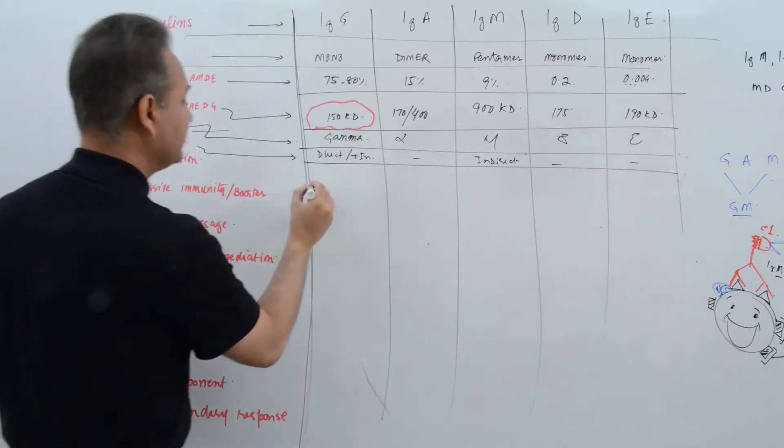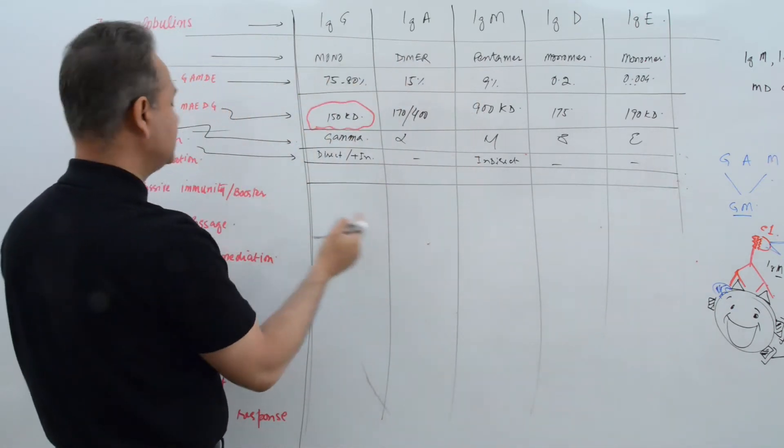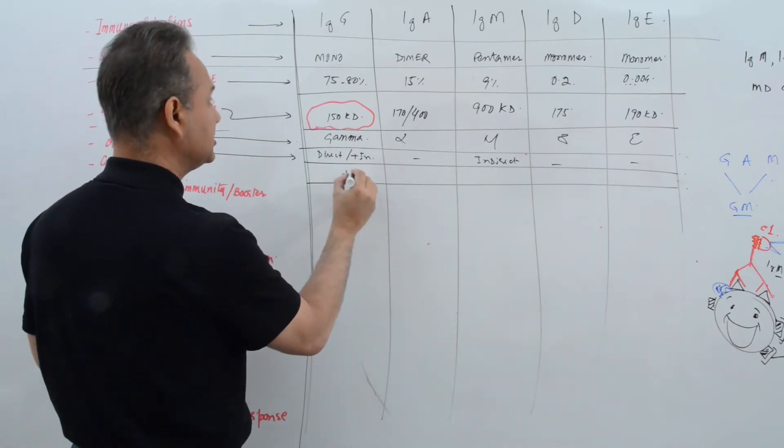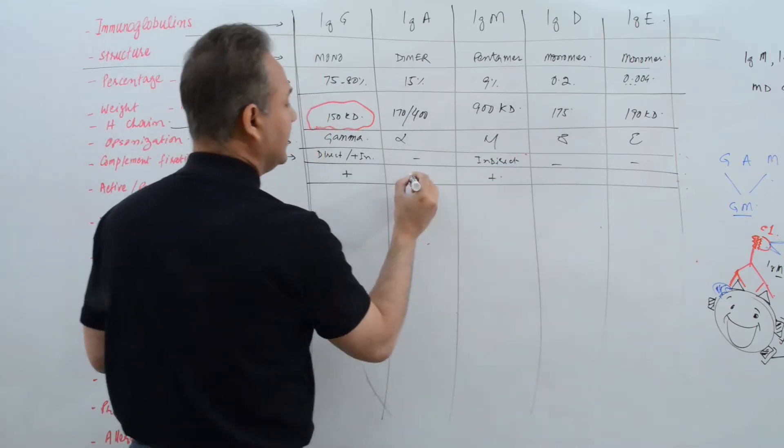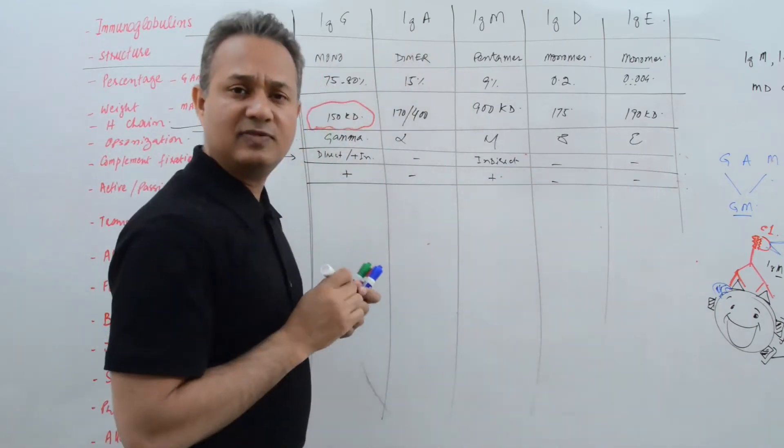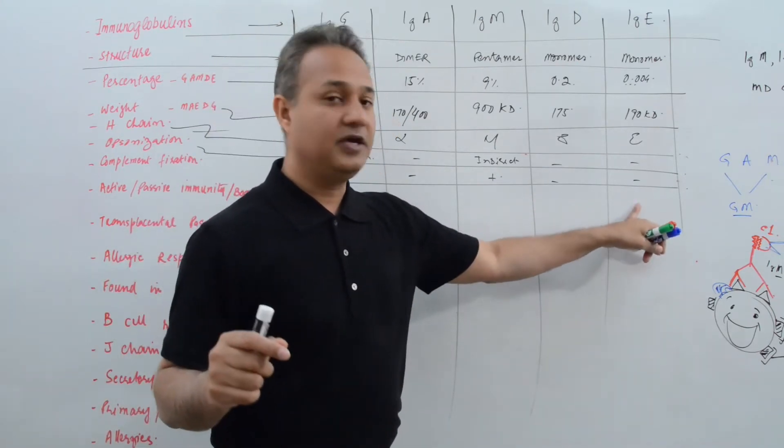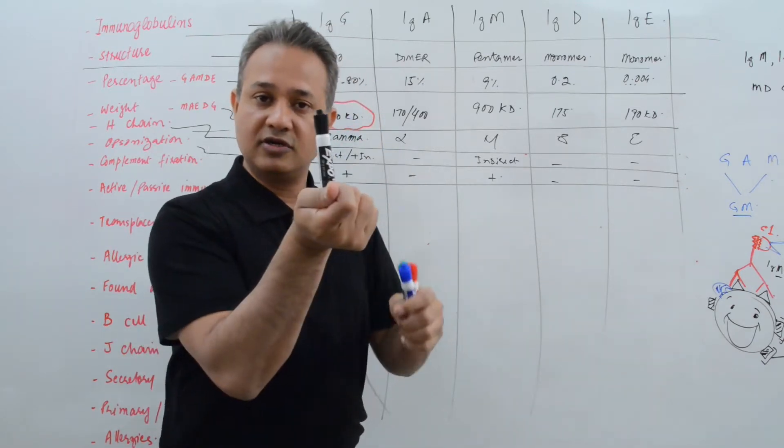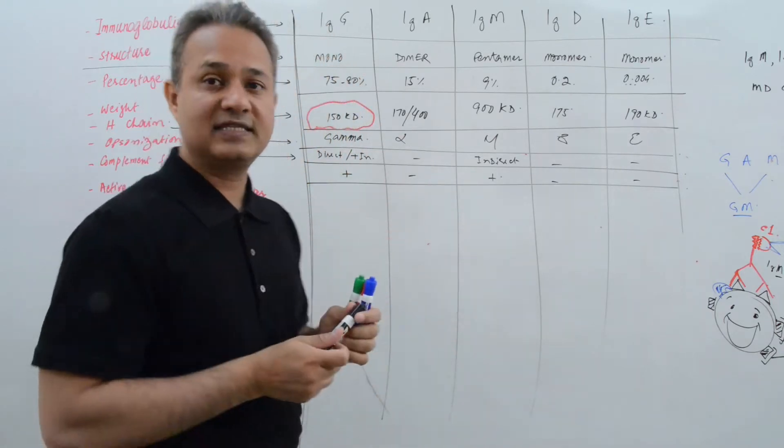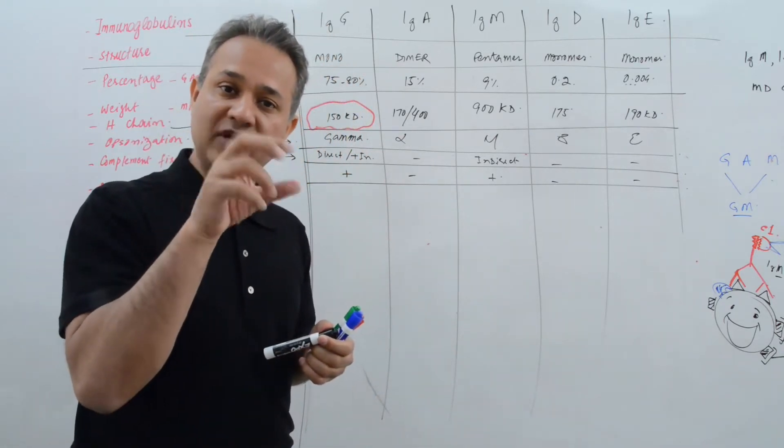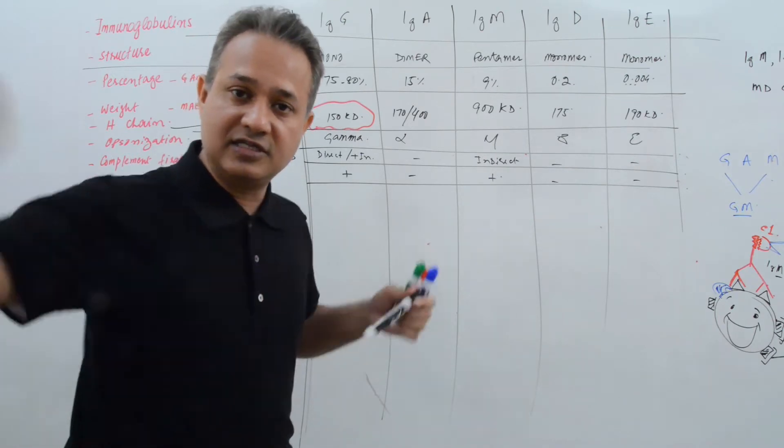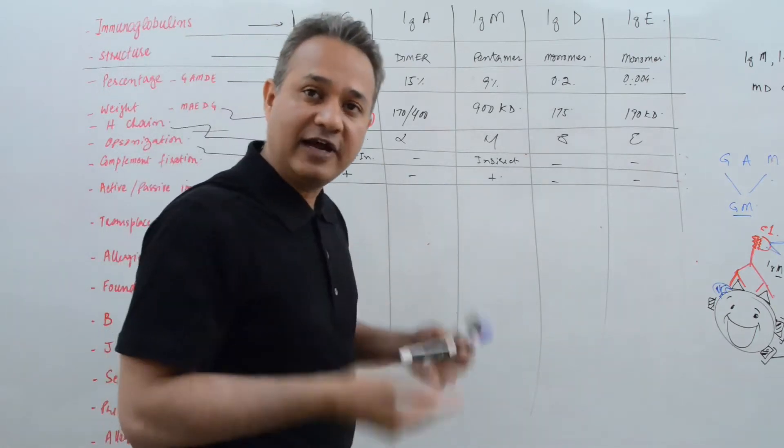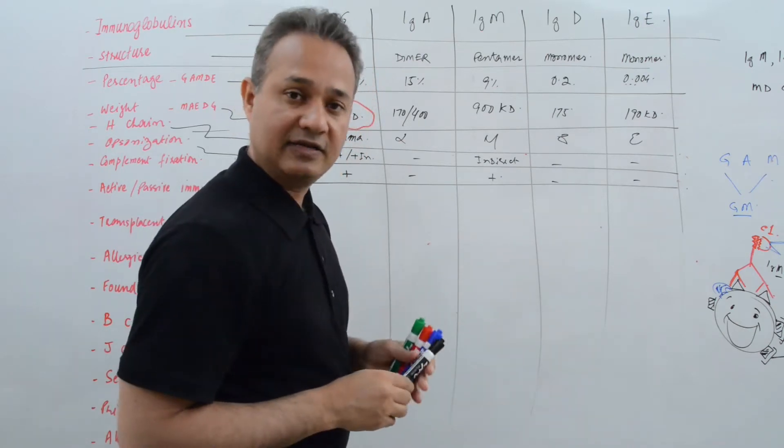Then complement fixation. The indirect means complement fixation. So there are just two, IgM and IgG. G, M makes classic cars. So complement fixation IgG yes, IgM yes, A, E, no. And it's very simple. Look, D is useless. E is sitting on the mast cell with the FC portion, so why would it fix the complement? And A is standing on the mucosal membranes. We don't need the membrane attack complexes there to kill our own cells. It just handles the immunoglobulin antigens. So really G and M are actually fighting the pathogens, so they both can actually activate the complement.